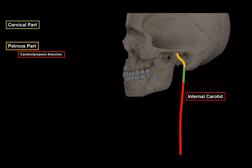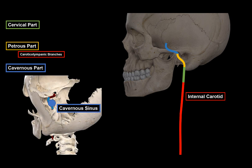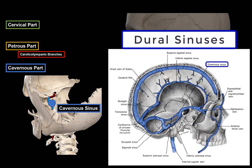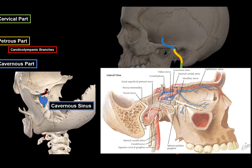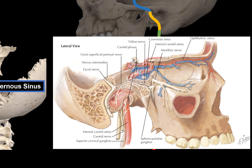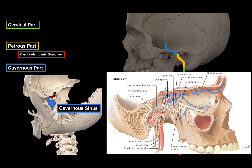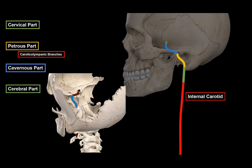As it leaves the canal and enters the middle cranial fossa, it becomes the cavernous part, passing right through the cavernous sinus. The cavernous sinus is one of the dural sinuses of the head — large veins draining blood from the brain down mainly through the jugular vein. It is called the cavernous part because it goes through the cavernous sinus. As it continues upward, it gets the name cerebral part, where it is divided into five terminal branches.